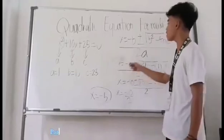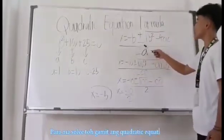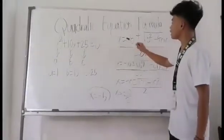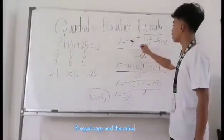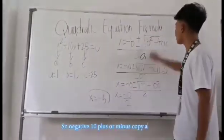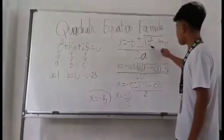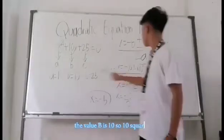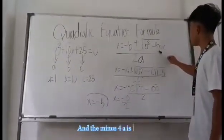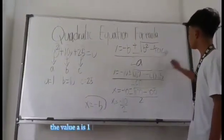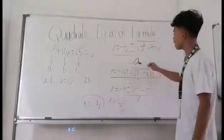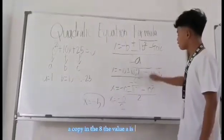We will substitute the values of A, B, and C to solve this using the quadratic equation formula. So we have x equals negative B, which is negative 10, plus or minus, then the radical, the value of B is 10, so 10 squared minus 4AC. The value of A is 1 and the value of C is 25. And the denominator is 2 times the value of A, which is 1.